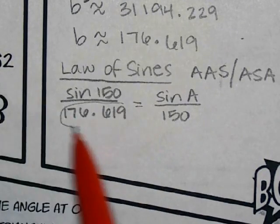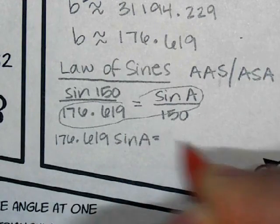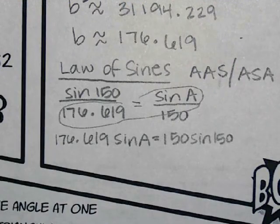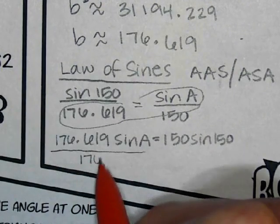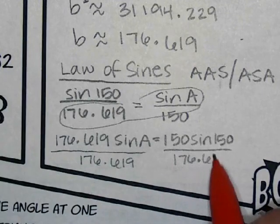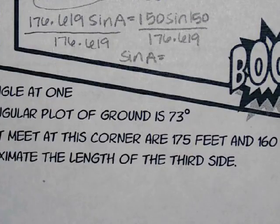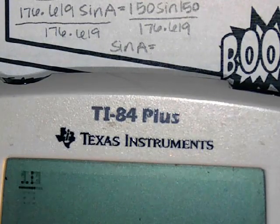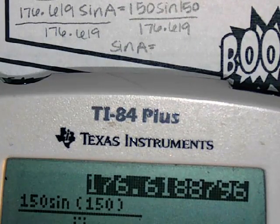So I'm going to get 176.619 times sine A equals 150 times sine 150. And then what do I do? Divide by my decimal. So sine A equals whatever that decimal is. I'm going to compute 150 sine 150 divided by 176.619.